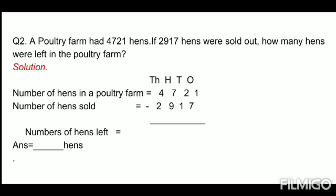Now let's read problem sum number 2. A poultry farm had 4,721 hens. If 2,917 hens were sold out, how many hens were left in the poultry farm? A poultry farm is a place where hens are kept. Number of hens in the poultry farm: 4,721. And number of hens sold: 2,917.